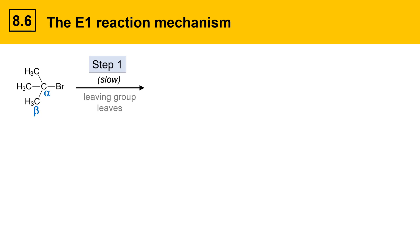The first step, the slow step, involves the leaving group leaving. The leaving group leaves to give a carbocation intermediate.